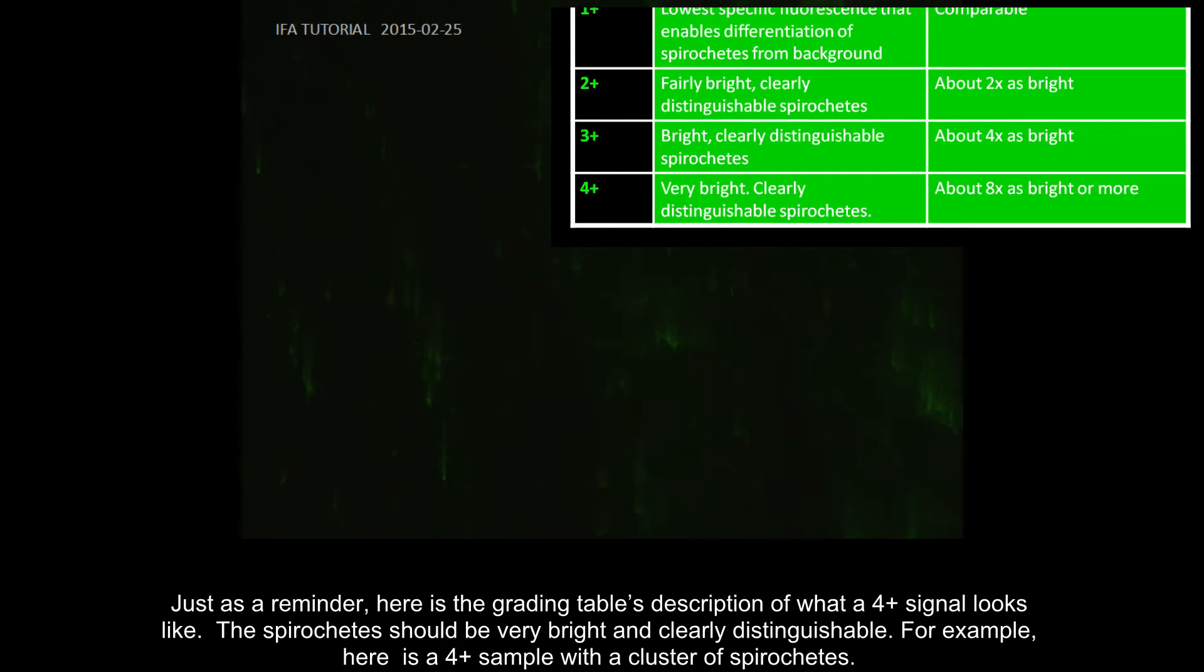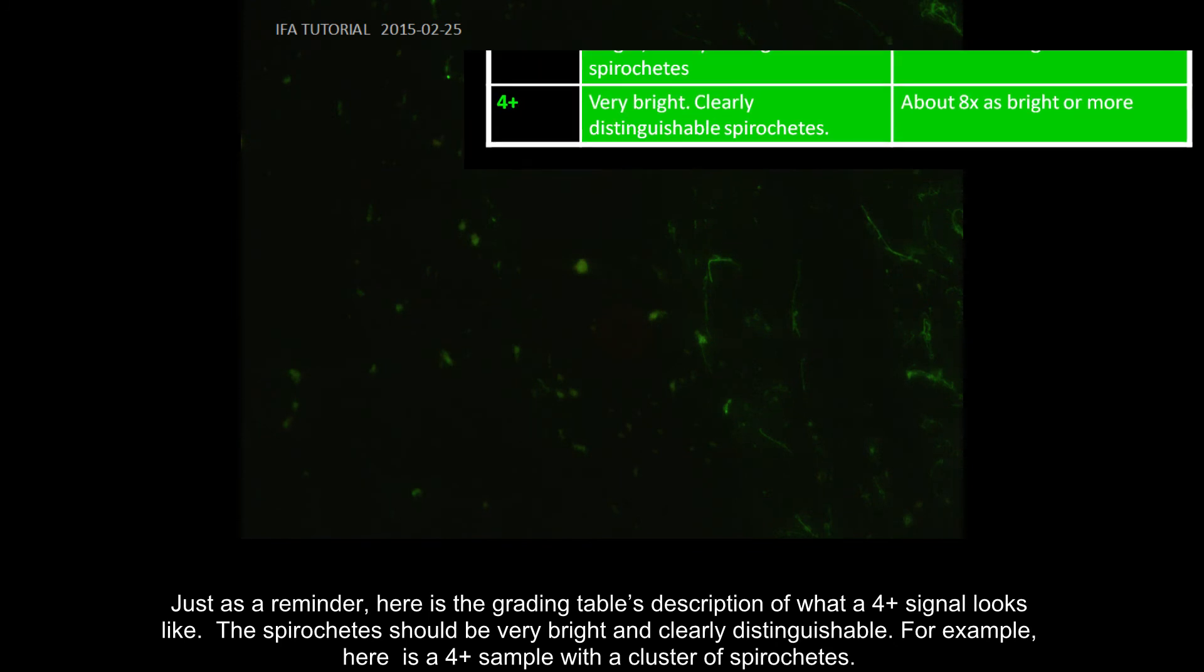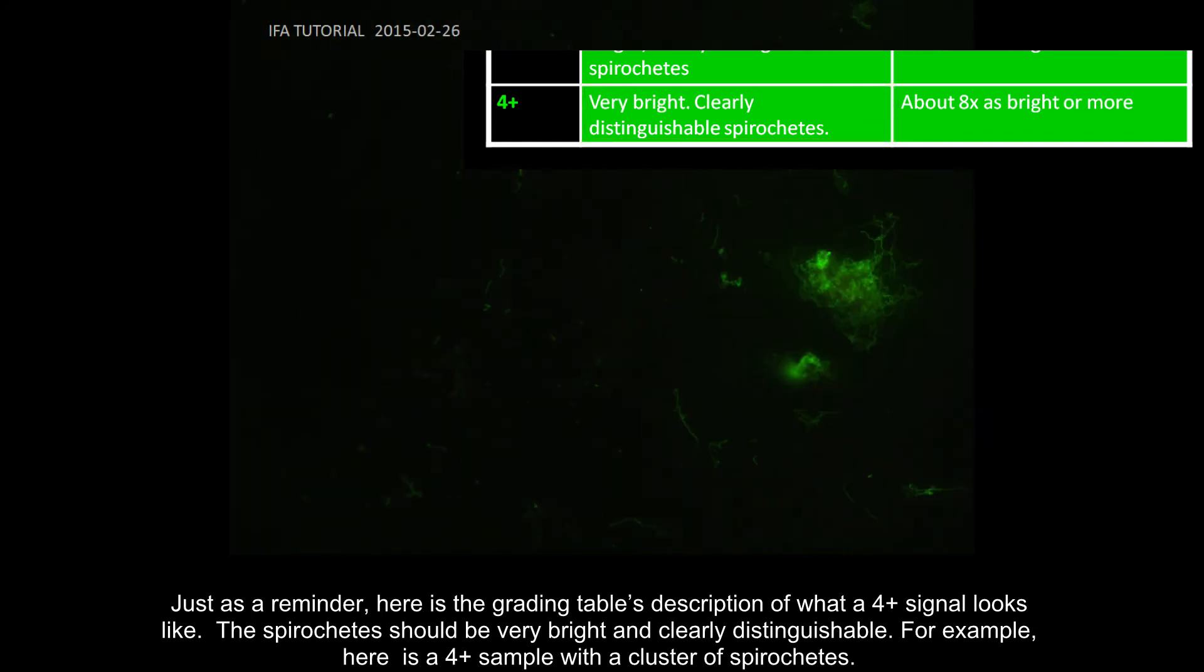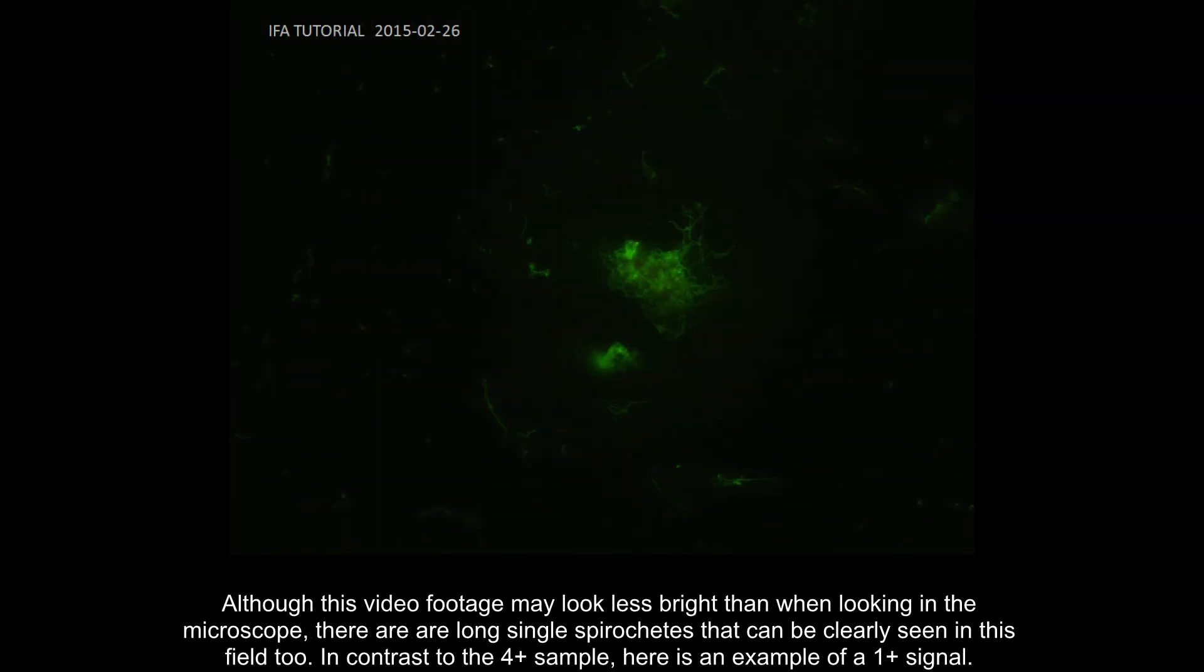Just as a reminder, here is the grading table's description of what a 4-plus signal looks like. The spirochetes should be very bright and clearly distinguishable. For example, here is a 4-plus sample with a cluster of spirochetes. Although this video footage may look less bright than when looking through the microscope, there are long single spirochetes that can be clearly seen in this field, too.